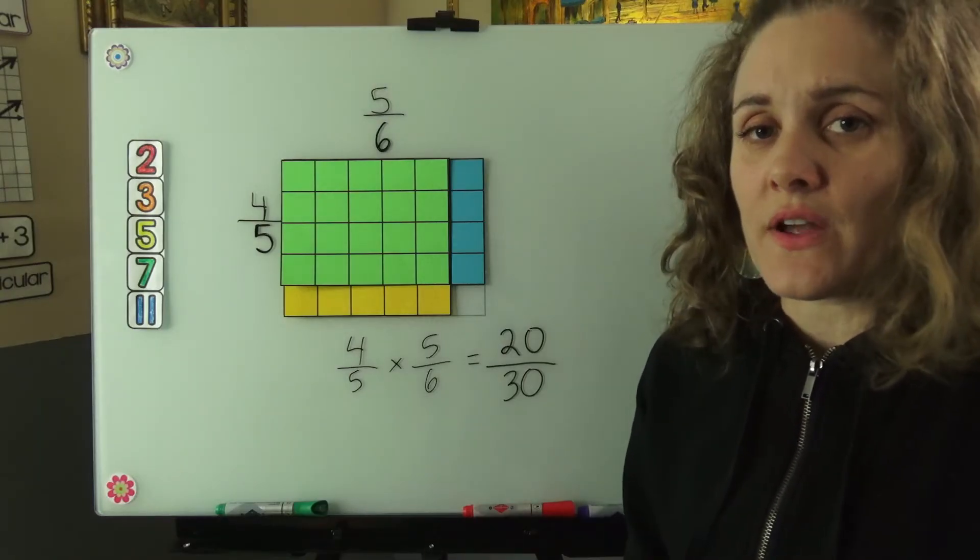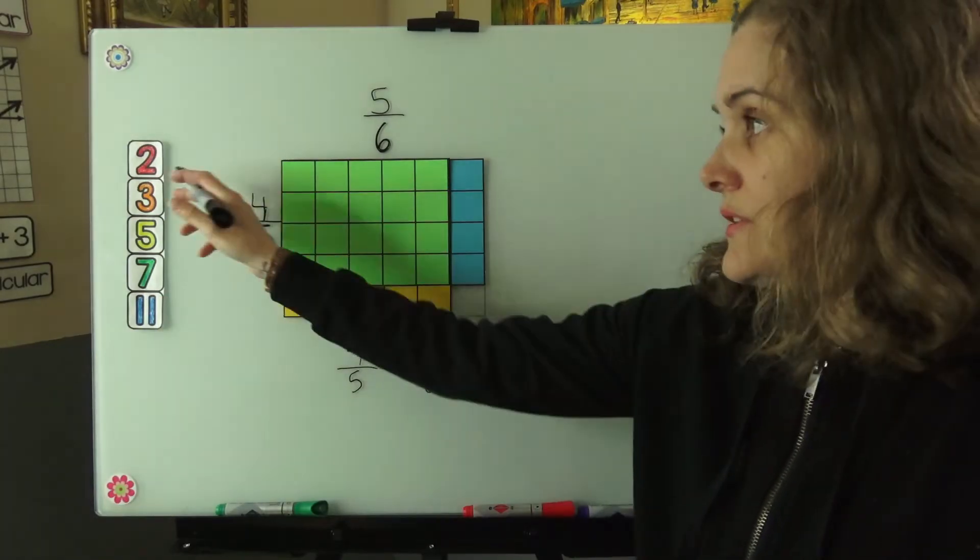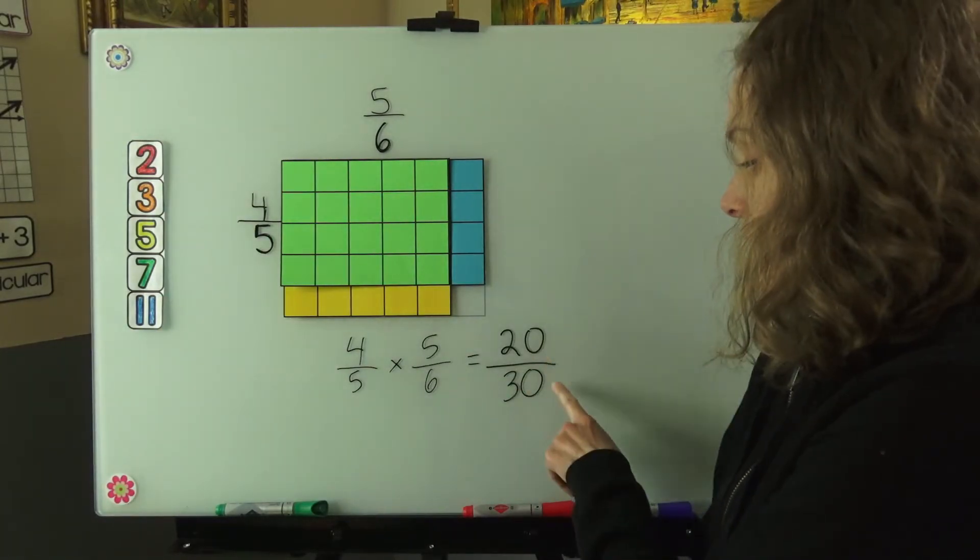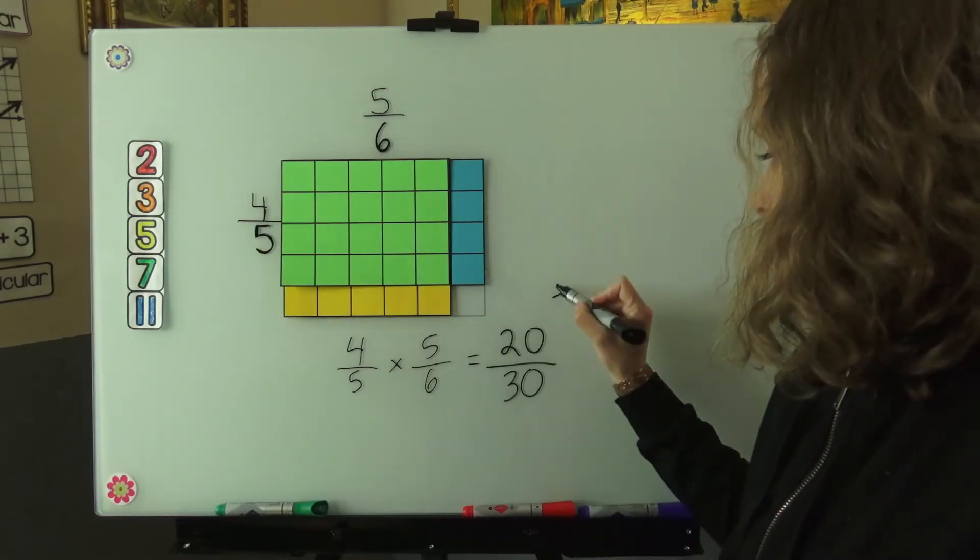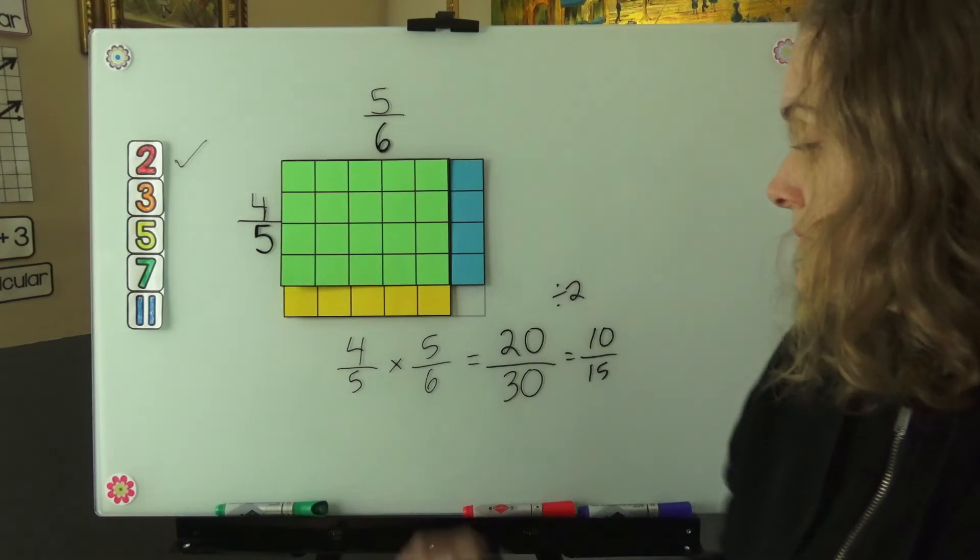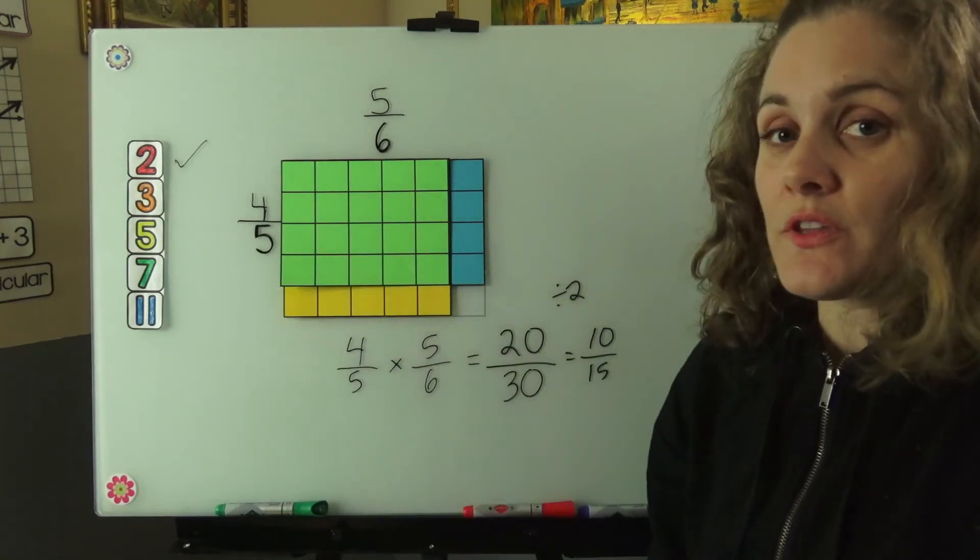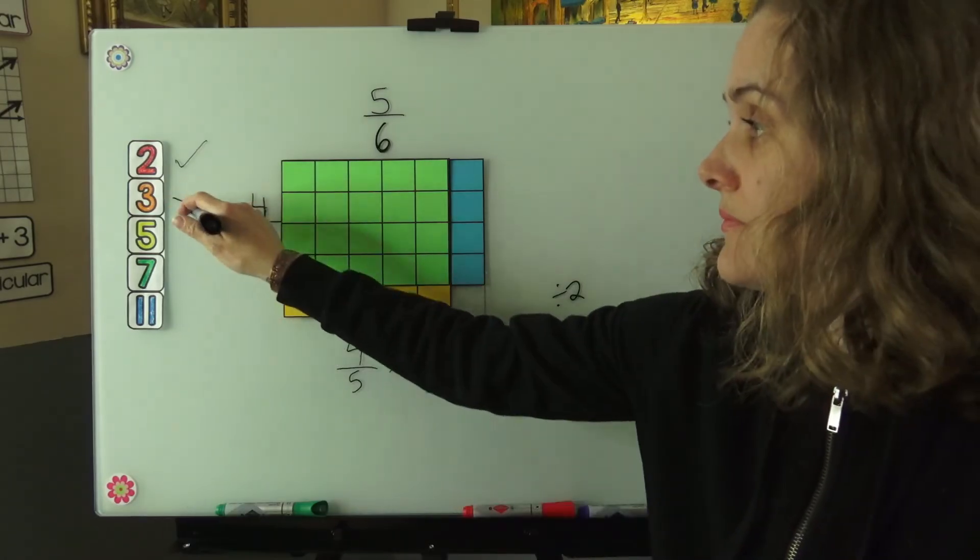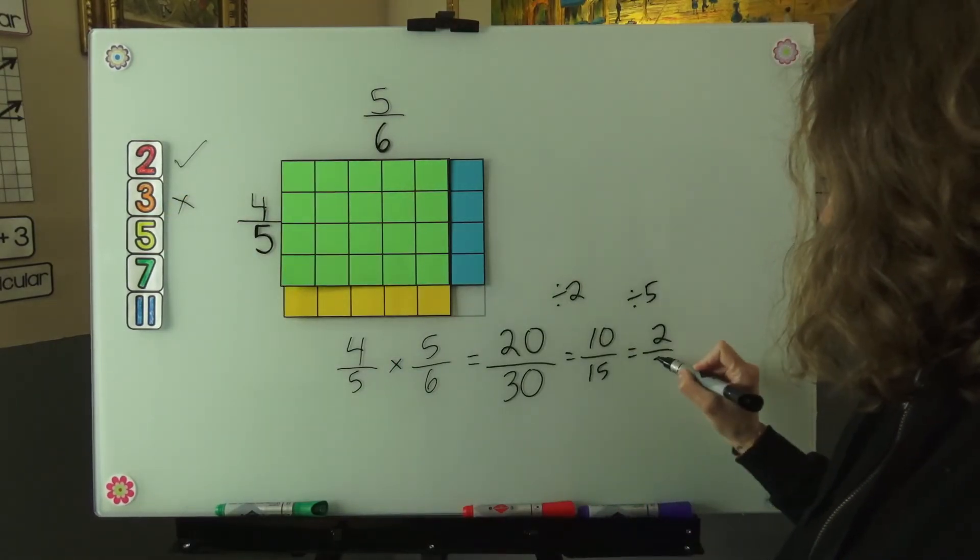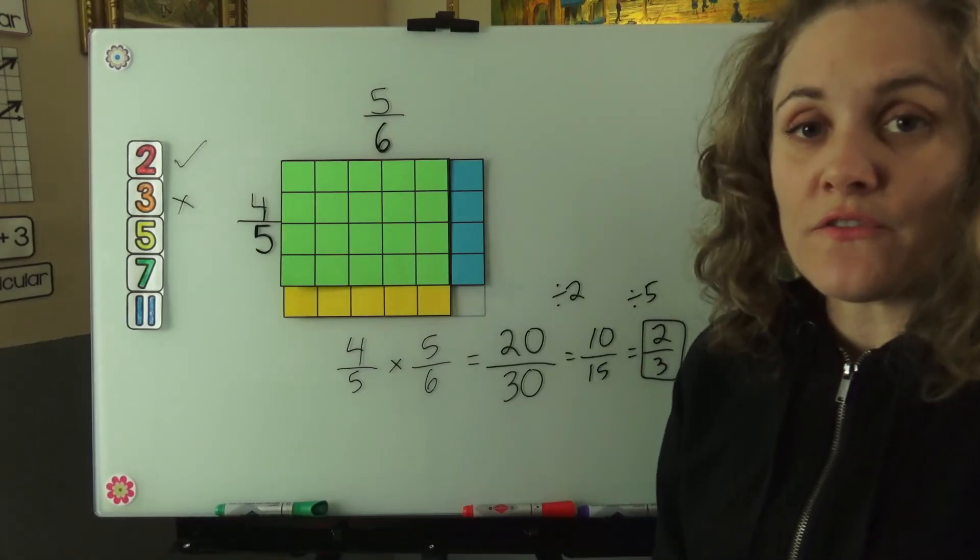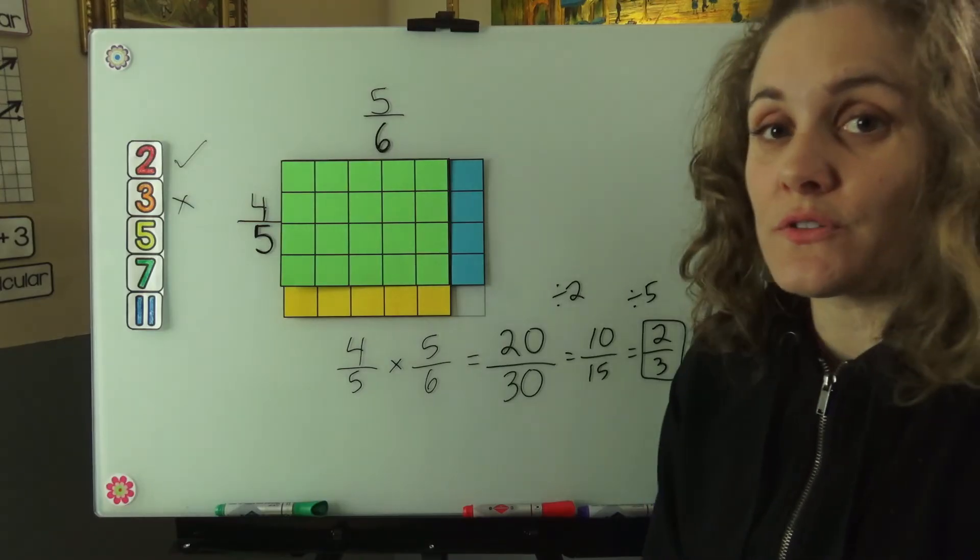So how do we simplify that fraction? I have these prime numbers over here that we can use to help us. Let's first ask if both the numerator and the denominator divide by 2. They do, because they're both even. Are 10 and 15 both even? No. Do they both divide by 3? Nope. Do they both divide by 5? They do. So we can see that 4 fifths times 5 sixths is 2 thirds.